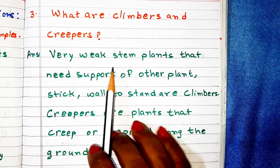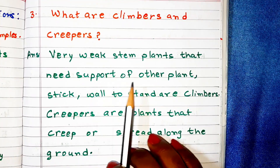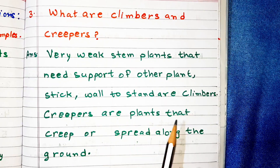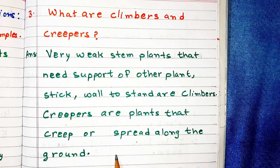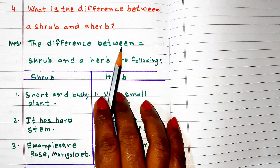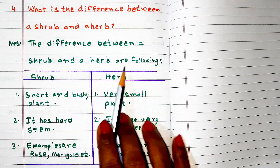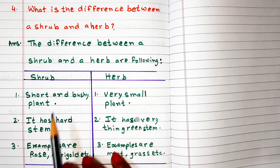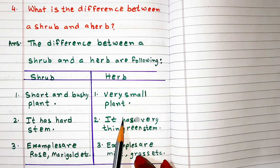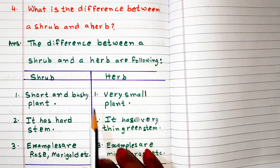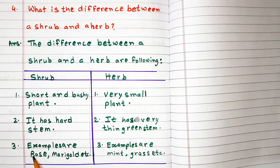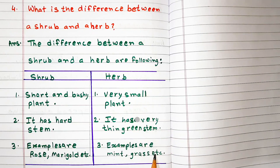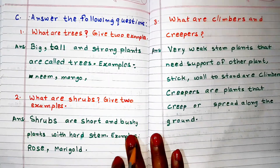What are climbers and creepers? Answer: very weak stem plants that need support of other plants, sticks, or walls to stand are climbers. Creepers are plants that creep or spread along the ground. What is the difference between a shrub and a herb? Shrub: short and bushy plant with a hard stem; examples: rose, marigold. Herb: a very small plant with a very thin green stem; examples: mint, grass. Next video will be on our body and their sense organs.